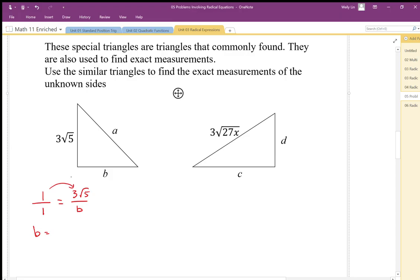We can use our multiplier of times 3 root 5, or we can do our up and down multiplier times 1. You can just do times 1, and B is equal to 3 root 5. You can solve this as an equation if you like, cross multiply, or you can just use intuition if you like.